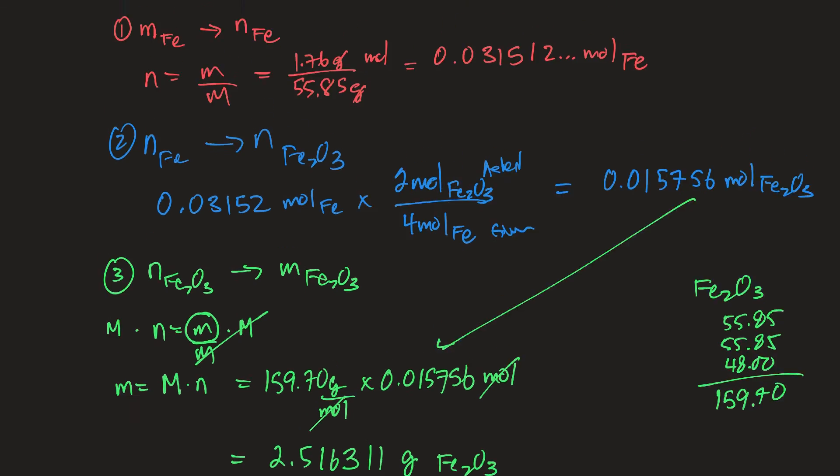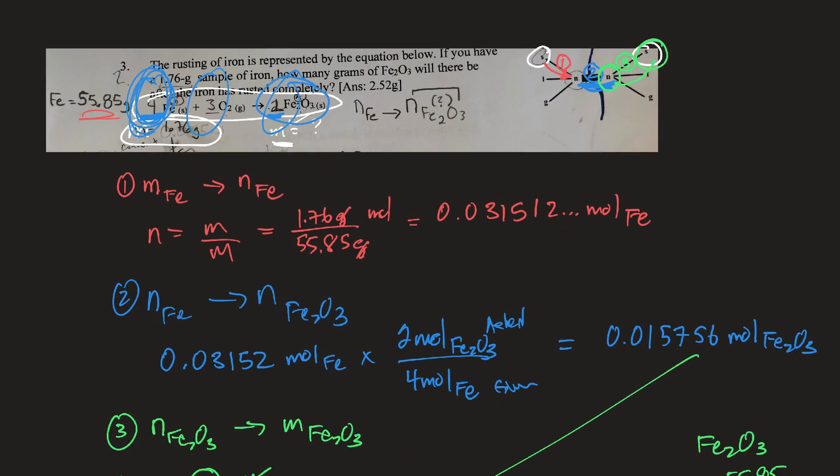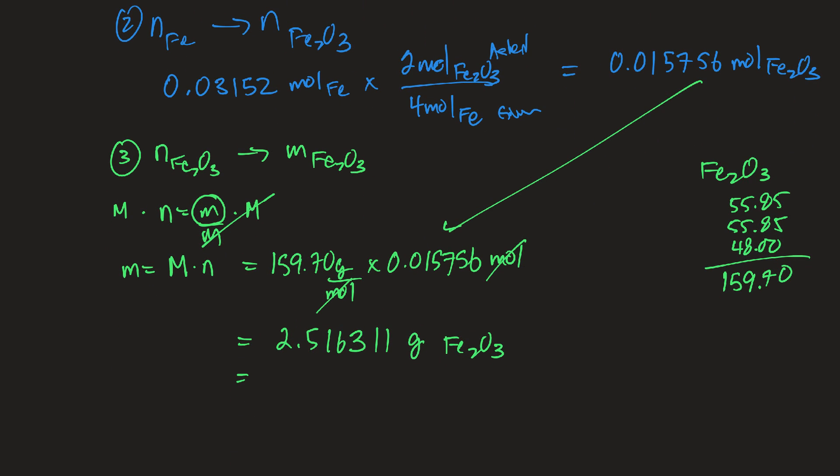And then I look for sig figs. Sig figs are 1.76. So it's three sig figs. So I've got to go three sig figs, 2.52 grams.